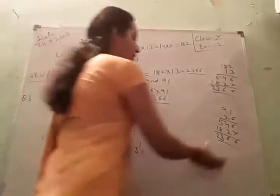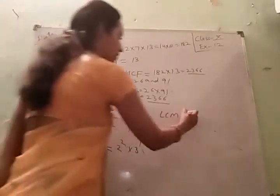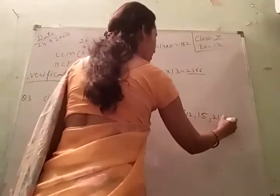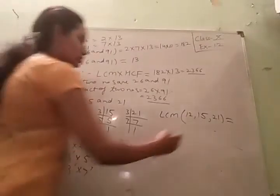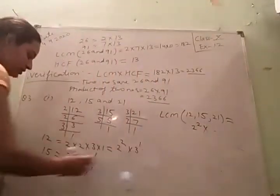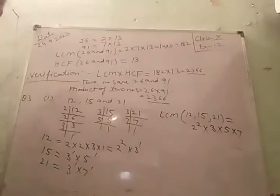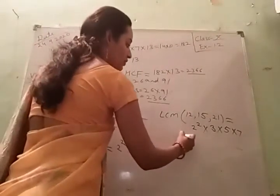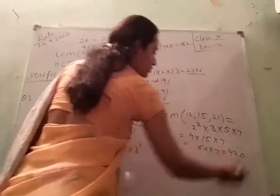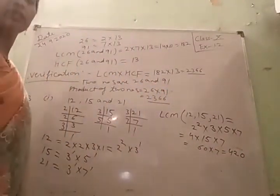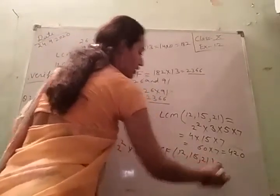Now finding LCM and HCF. LCM of 12, 15, and 21: take greatest power of all prime factors. LCM = 2² × 3 × 5 × 7 = 4 × 15 × 7 = 420. Now find HCF of 12, 15, and 21: the common factor is 3, which appears once in all three numbers. So HCF = 3.